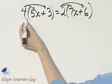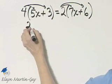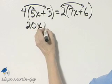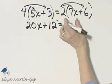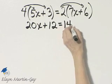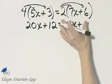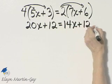On the left side, 4 times 5x, that's 20x, plus 4 times 3 is 12, is equal to 2 times 7x, that's 14x, plus 2 times 6 is 12.